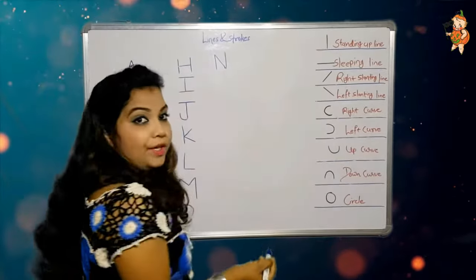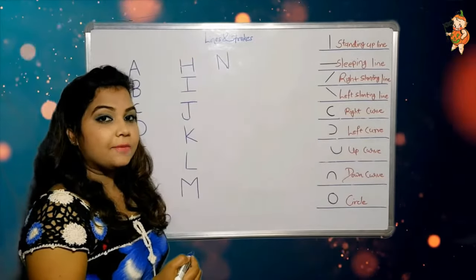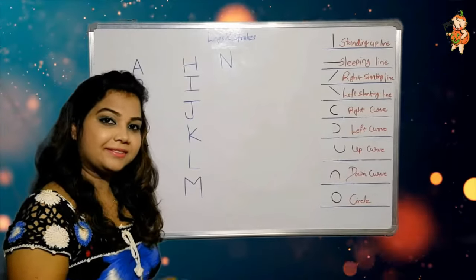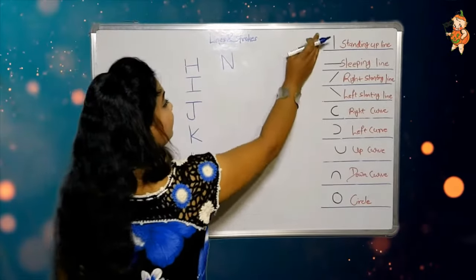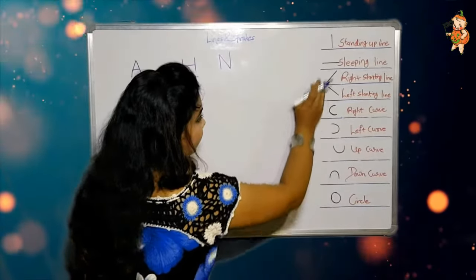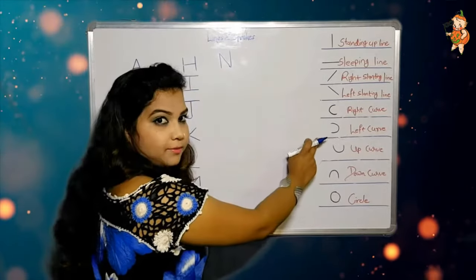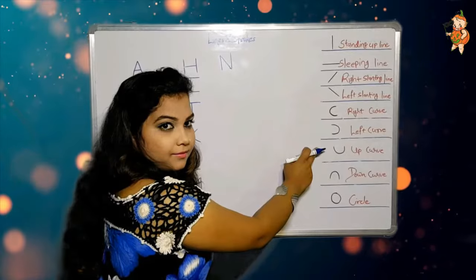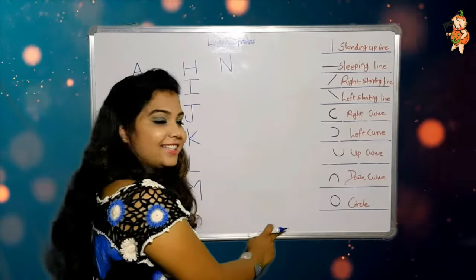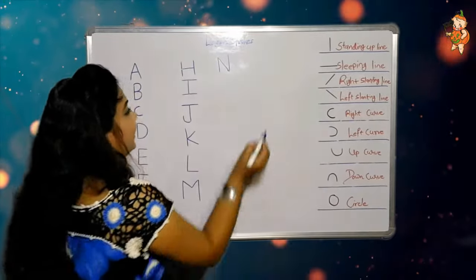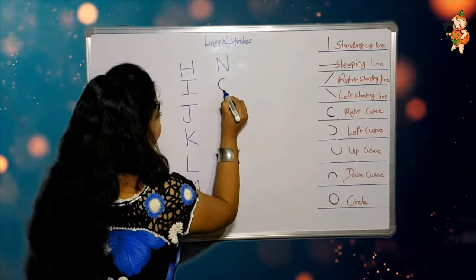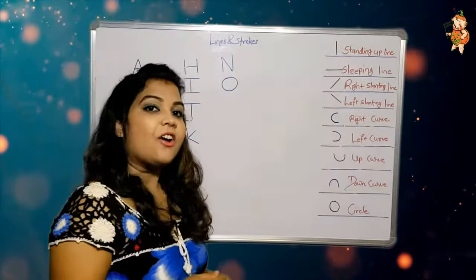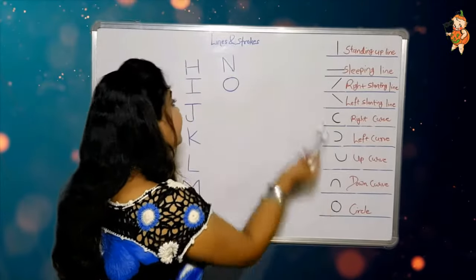Now it's time to make O. You tell me how to make O — it's very simple. The last one, the circle, makes O. We can also call a circle as O.